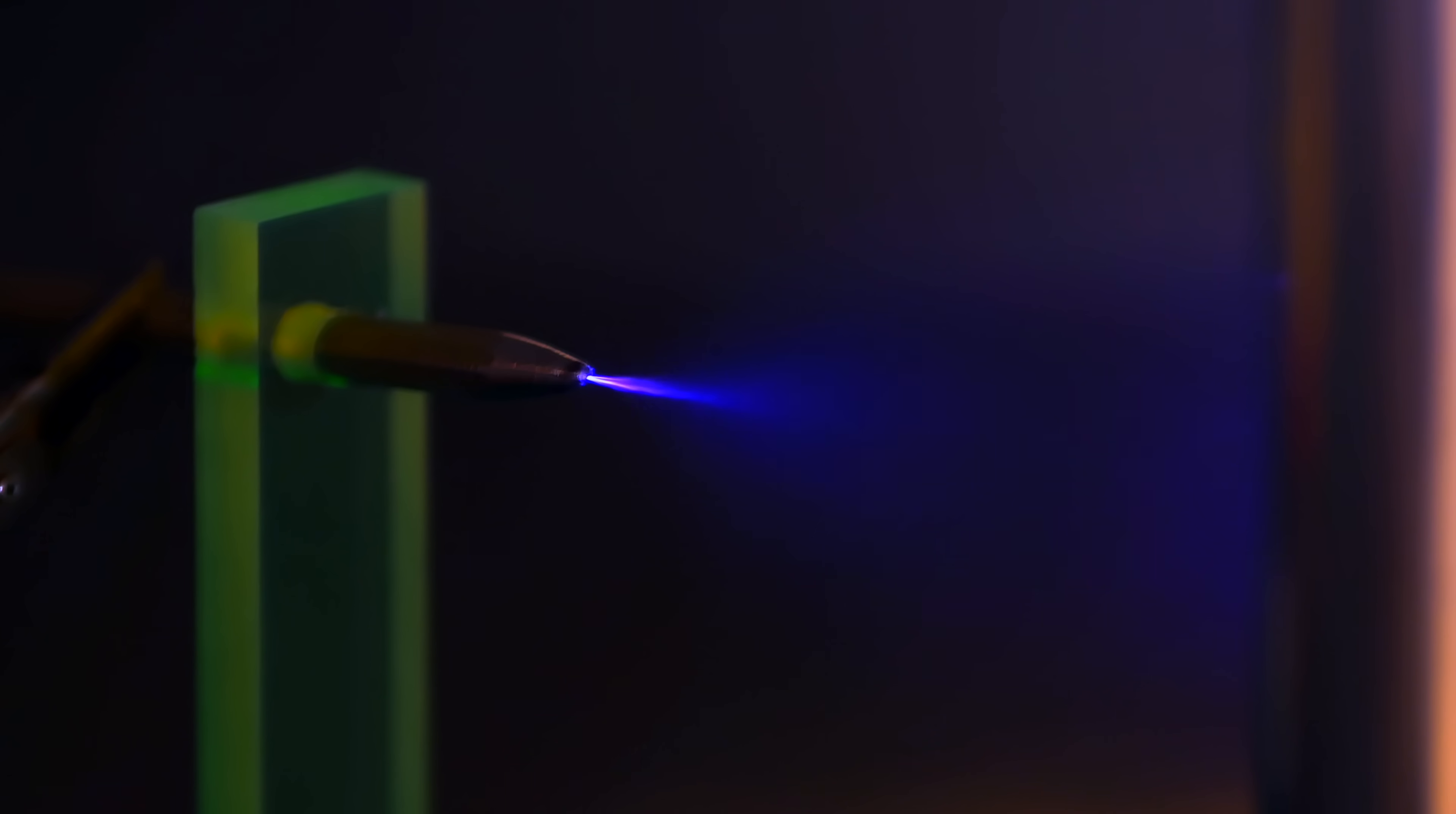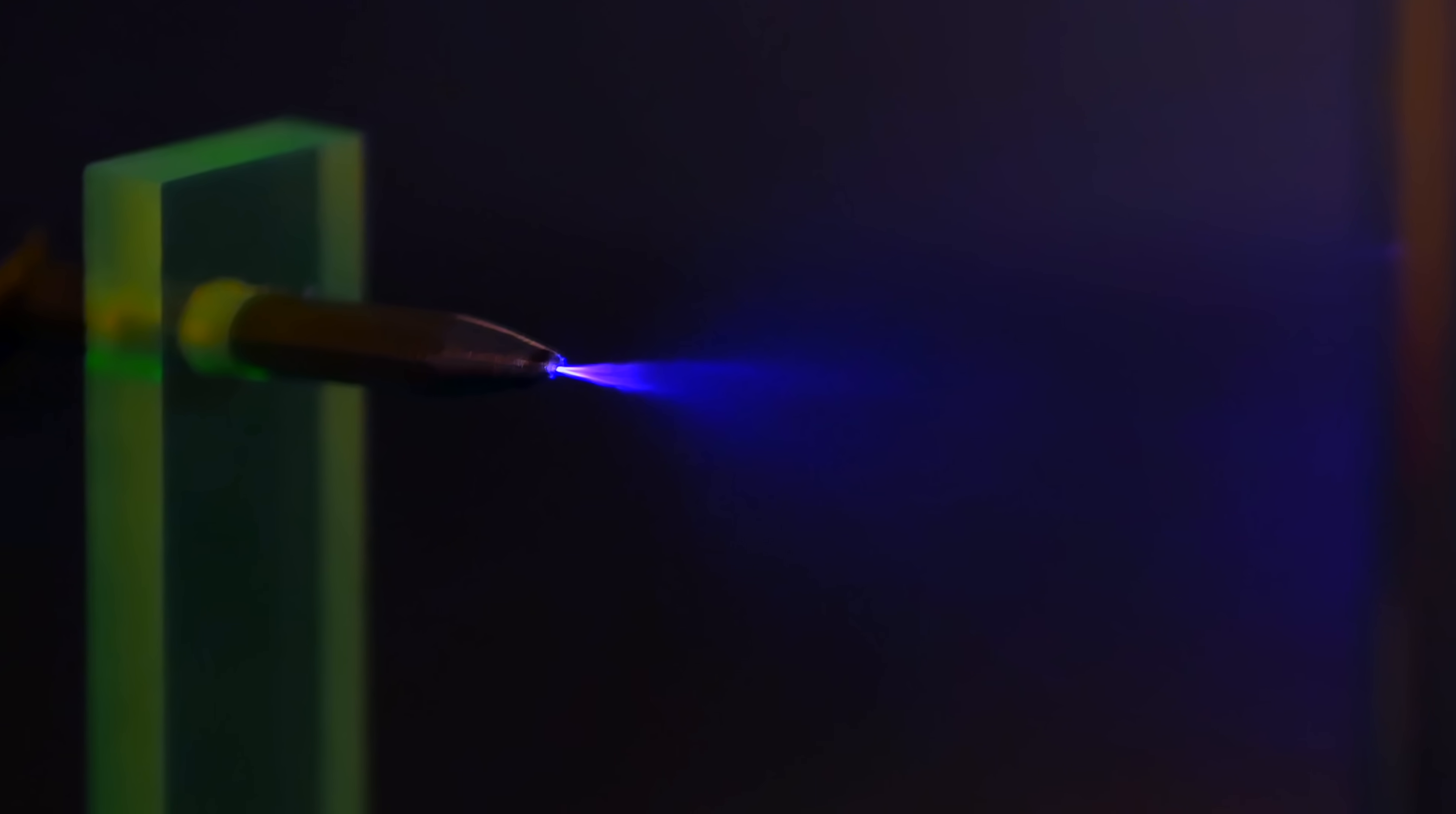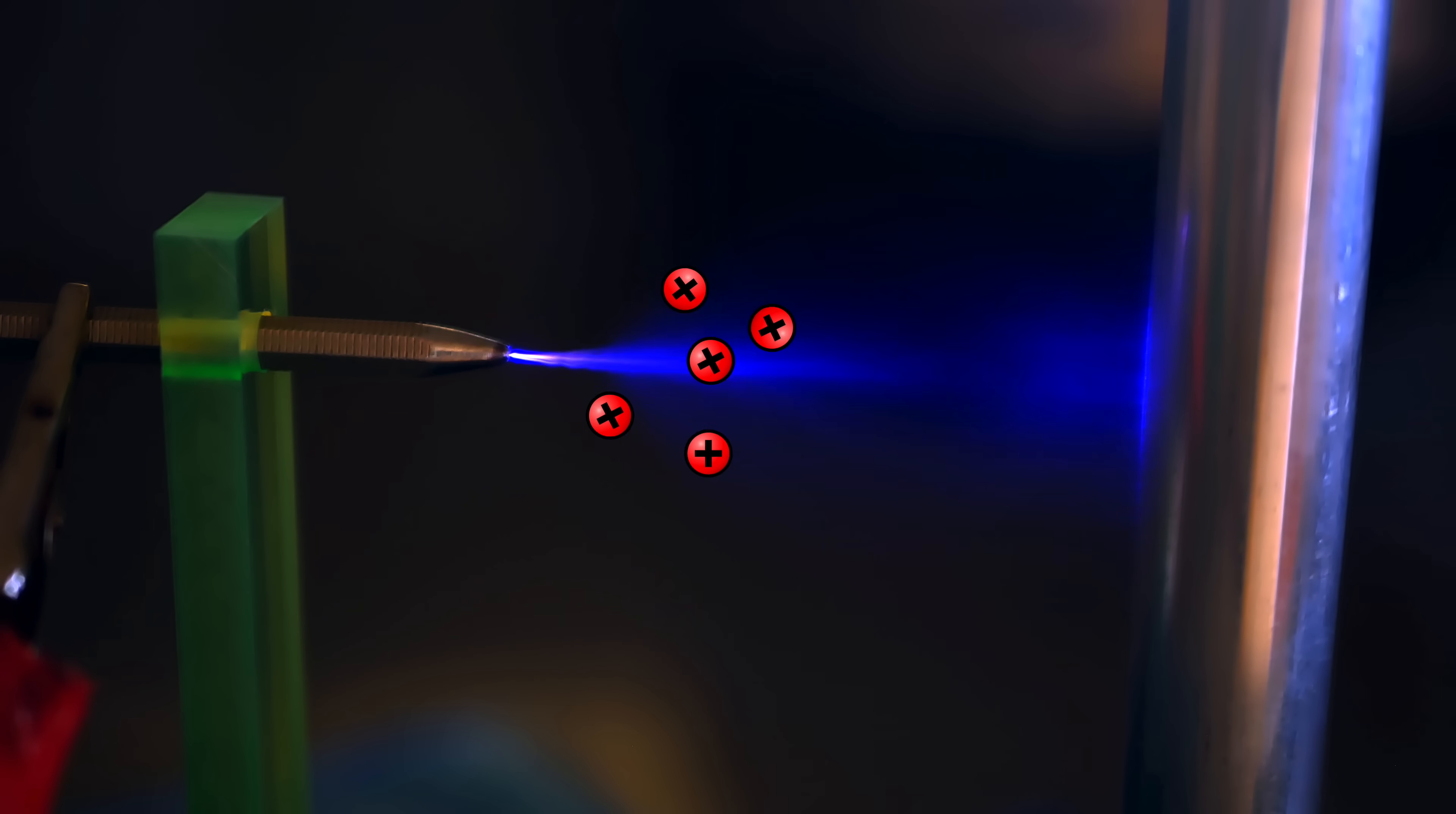Okay, at its fundamental level, ionic wind is actually pretty simple. It's essentially air movement resulting from a DC electric field. With high enough voltages, a sharp positive electrode will ionize the surrounding air molecules. That's the glow you see and what's coming up later. Those charged molecules are then repelled away and attracted to a wider ground electrode.